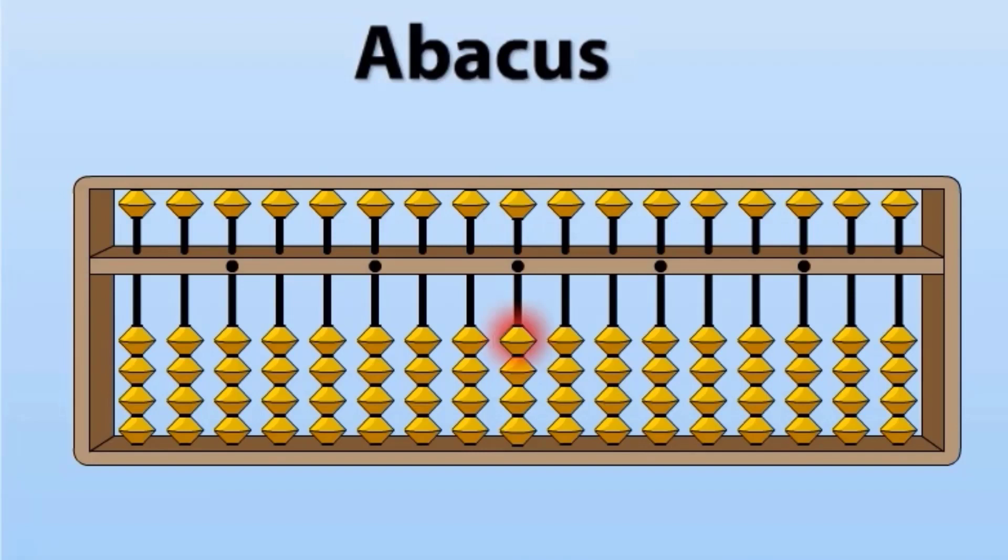Let's take 1. We will take 1 towards value bar. Now if we want to add 1 more to this 1, we will take another bead up. Now 1 plus 1 is 2. If you want to add 2 more to this value, just take 2 beads above. Now this is 4.